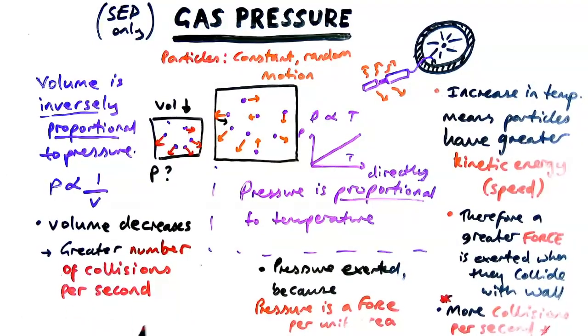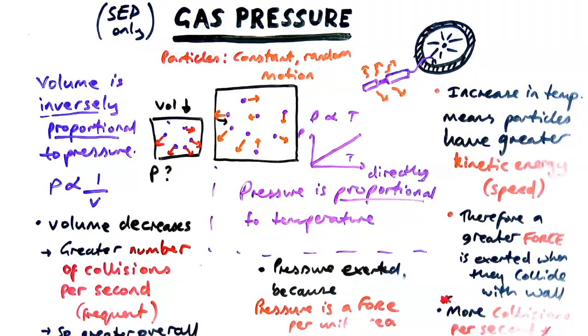So you can either say it's a greater number of collisions per second or you can say the collisions are more frequent or that would be fine for the mark. But collisions per second is better.